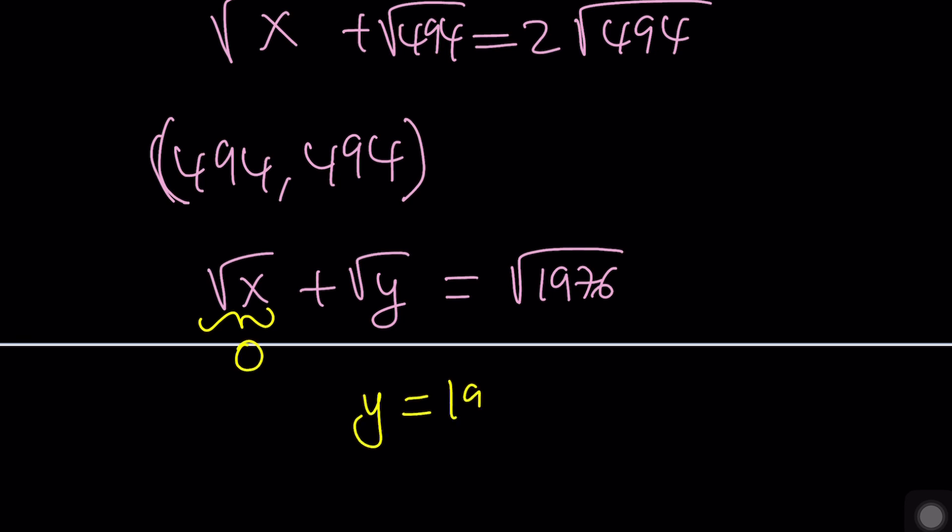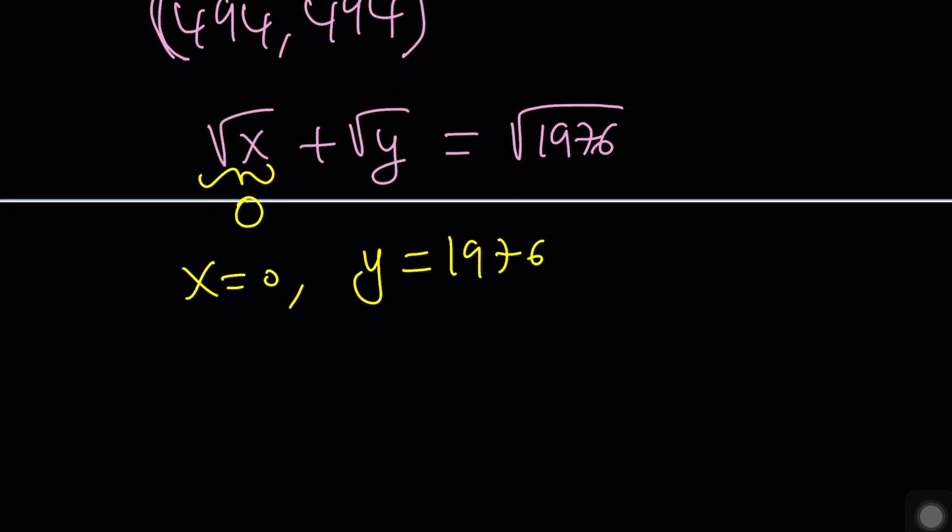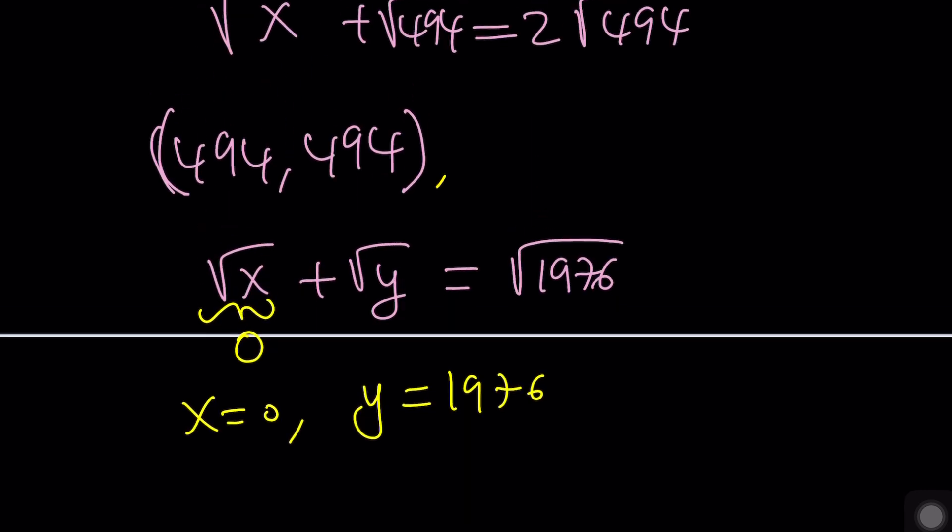Of course they can always switch around because this is a switchable equation. I don't know if that makes sense, but it means that it's symmetrical. So you can basically come up with these ordered pairs.